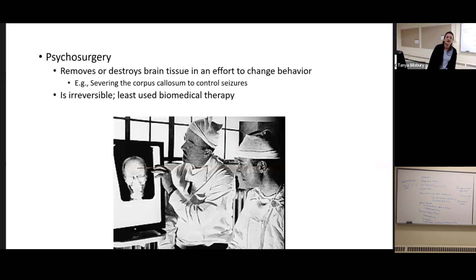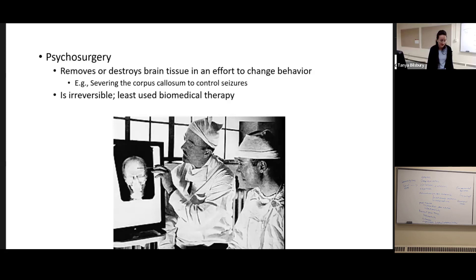Now let's get into more dramatic interventions. Psychosurgery removes or destroys brain tissue in an effort to change behavior — that is a last line, not a first line, because it's irreversible and things can go wrong. In the past, sometimes they severed the corpus callosum in people with very severe schizophrenia to reduce their seizures, resulting in a person with a kind of split brain where the left and right hemispheres work separately and can't communicate with each other. That's done less often today because of advances in medication.